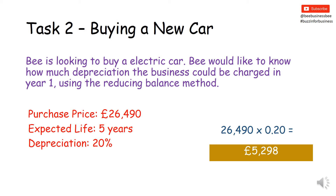So you hopefully have got the answer now of £26,490 multiplied by 0.20 — that's a way of finding 20% — and that would give you £5,298. In that first year that would be apportioned to depreciation and put on the Statement of Comprehensive Income.